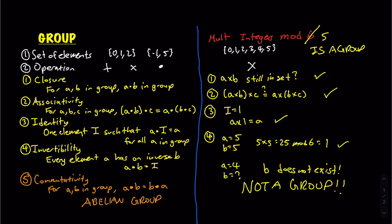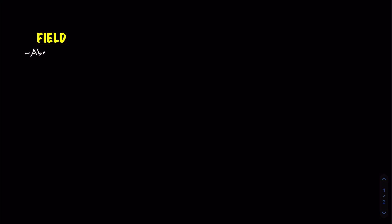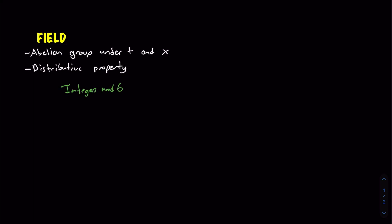Now that we have a good understanding of groups, let's move on to fields. A field is a set of elements that is an abelian group under both the addition operation and the multiplication operation, and also has the distributive property — the same one you learned in elementary school. The integers mod 6 is not a field because it's not a group under multiplication. However, the integers mod 5 is a field because it's an abelian group under both addition and multiplication.